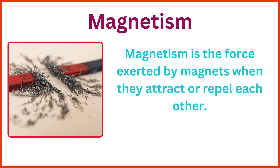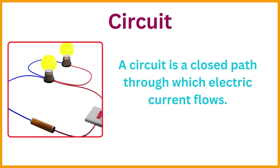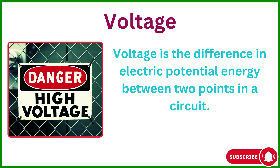Magnetism is the force exerted by magnets when they attract or repel each other. Electricity is the presence and flow of electric charge. A circuit is a closed path through which electric current flows. Voltage is the difference in electric potential energy between two points in a circuit.